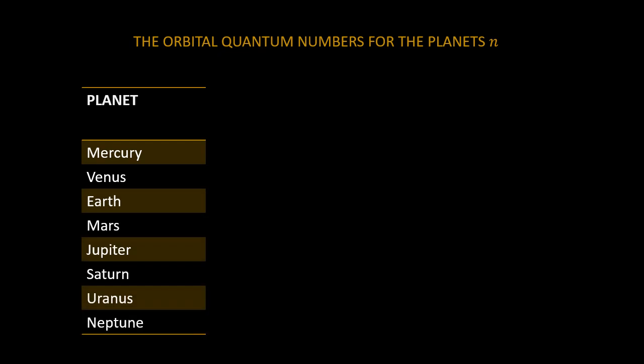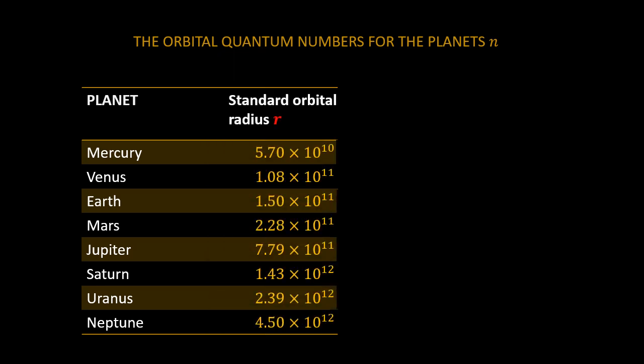Now, let us derive the quantum numbers for all the planets. The eight planets of our solar system are Mercury, Venus, Earth, Mars, Jupiter, Saturn, Uranus, and Neptune. Their respective orbital radii are given as shown.